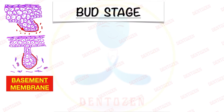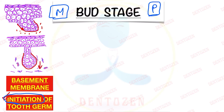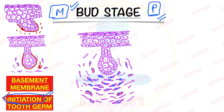These rounded or ovoid swellings are called tooth buds, which are growing downwards into the underlying mesenchyme. This is the initiation of tooth germ — a very very important term. The tooth germ has started forming, which will finally make our tooth. The cells of this tooth bud will keep on proliferating — they will continue to proliferate and divide — and the shape of this enamel organ is like a bud, that's why we are calling it bud stage.